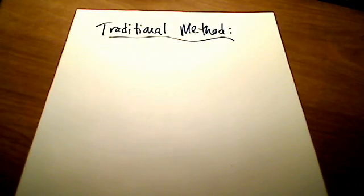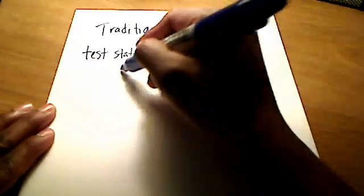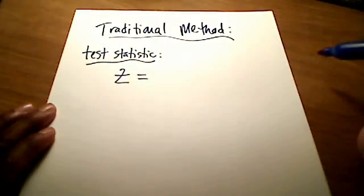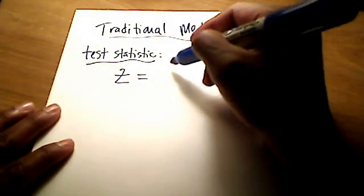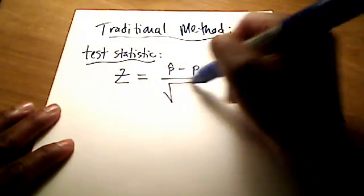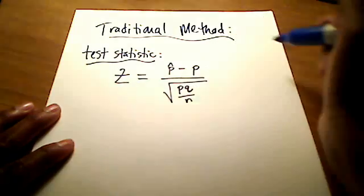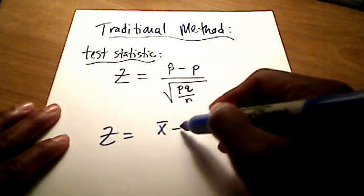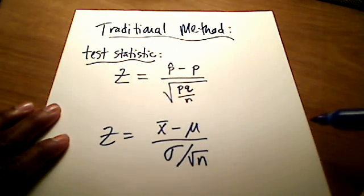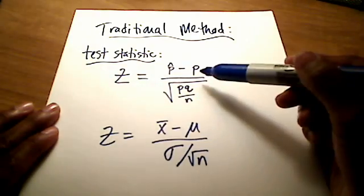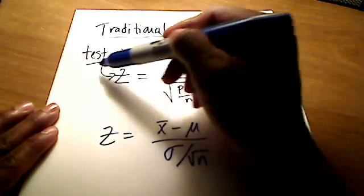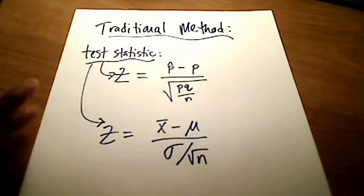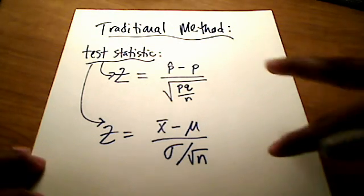The traditional method, as well as the p-value method, both rely on a test statistic — which is a z number. That test statistic is found using different formulas depending on what you're referring to. If you're talking about proportions, it's p-hat minus little p over the square root of little p times q, all over your sample size. If you're talking about mean, it's x-bar minus mu all over sigma divided by the square root of n. Both are examples of finding a test statistic from given data.